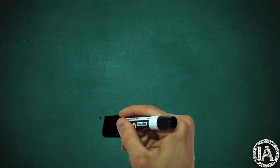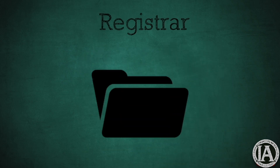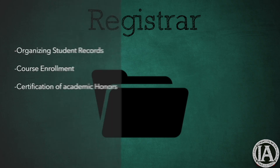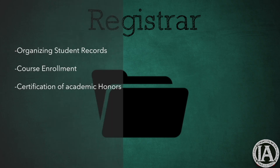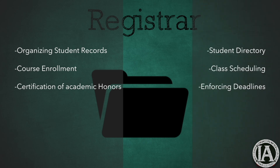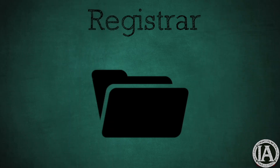The principal record-keeping officer at a college or university is the registrar. The office of the registrar is responsible for the organization of students' academic records, course enrollment, and certifying students for academic honors. They also prepare directories of registered students as well as oversee class scheduling and enforce deadlines.